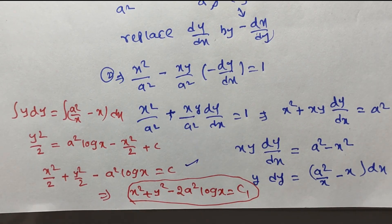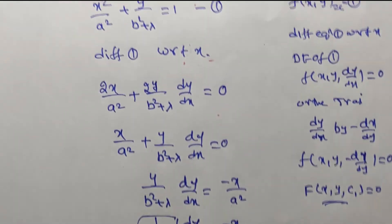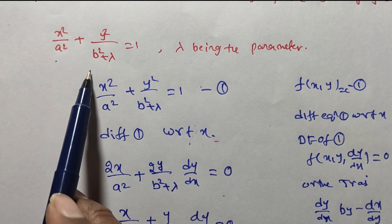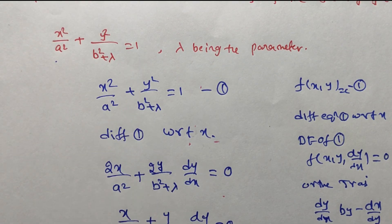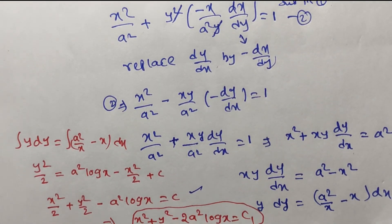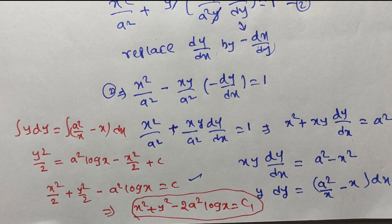This is the orthogonal trajectory of the given family x²/a² + y²/(b² + λ) = 1. This is how we find the orthogonal trajectory of a given family of curves. We will similarly solve a few more problems on this topic. Thank you for watching this video.